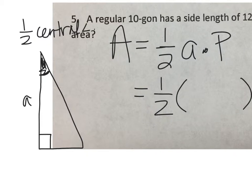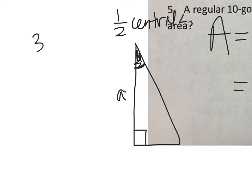The central angle for a 10-gon is 360 over 10. So the central angle is 36 degrees, giving us this angle of 18.